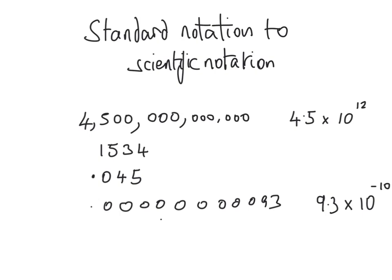Now let's look at a smaller number. This isn't the kind of number you'd normally use scientific notation for since there's no real advantage, but it's good to test your knowledge. Using the same method, we count the digits after the first digit — there are three — so it's going to be multiplied by 10 to the power of 3. To get the coefficient we put a decimal point after the first digit, ending up with 1.534.